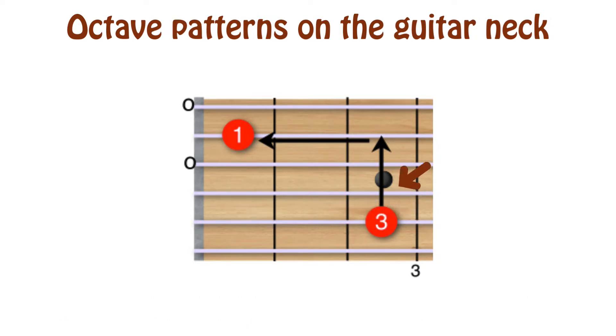From C on the fifth string, go three strings over, two frets down, or vice versa.